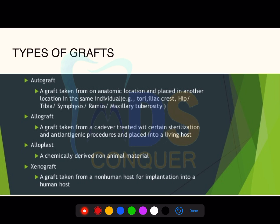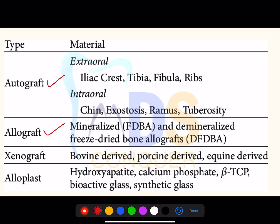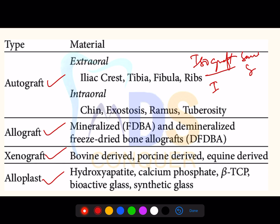Types of grafts: autograft — from the same individual at a different site; allograft — taken from a different individual; alloplastic — from a non-living source; xenograft — taken from a non-human of a different species. Isograft is a common question — a graft between individuals with identical genetic material, such as identical twins.